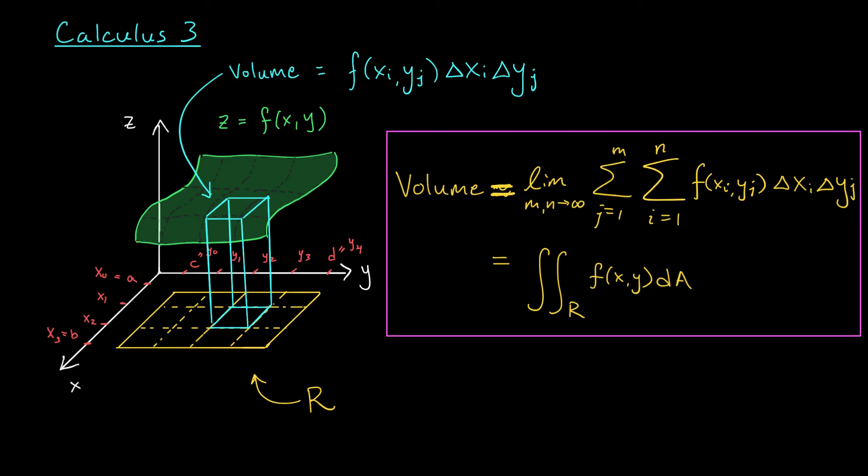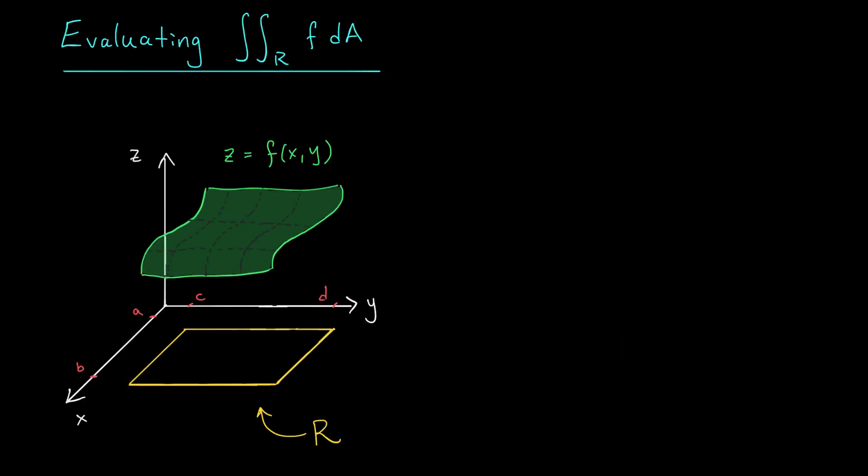Well, again, this is all well and good, but no one wants to compute this gross limit when looking for the volume. So just like in calc two, we're going to look for a more efficient way to compute this double integral. Okay, suppose now that I've given you a function f and you actually want to compute this double integral. You want to know the volume under the surface z equals f of x y. How do you do it? Do you compute that nasty limit from the last slide? No way. No one wants to do that. So instead, I'm going to show you an alternative that we actually use in practice.